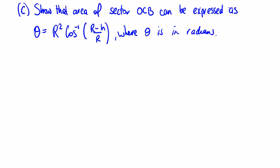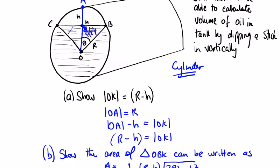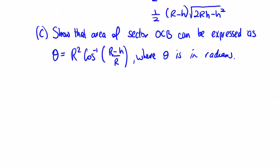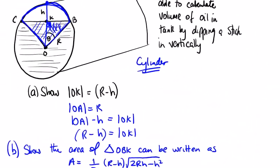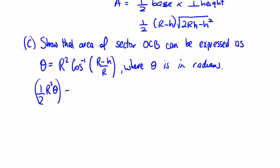Part C: show that the area of sector OCB can be expressed as R squared times the inverse cosine of (R minus H) over R. We're looking at the full sector OCB. The area of a sector is half R squared theta, but looking at the diagram we have two of them, so we double that — the area of the sector is twice a half R squared theta, which equals R squared theta. So we need to find what theta is.